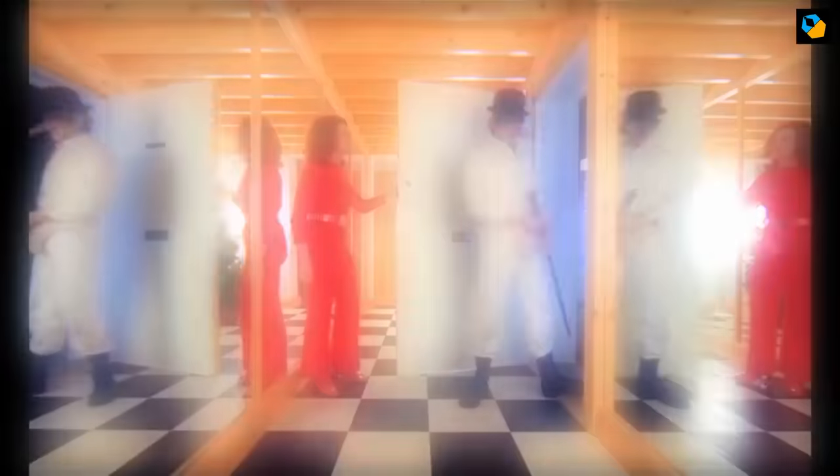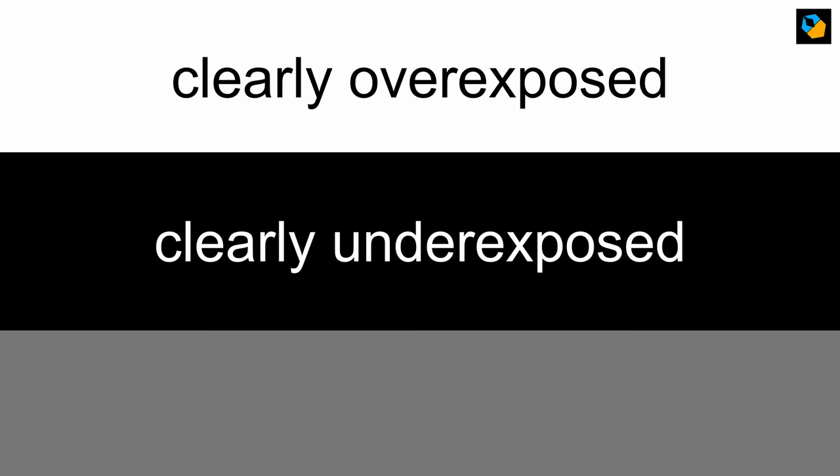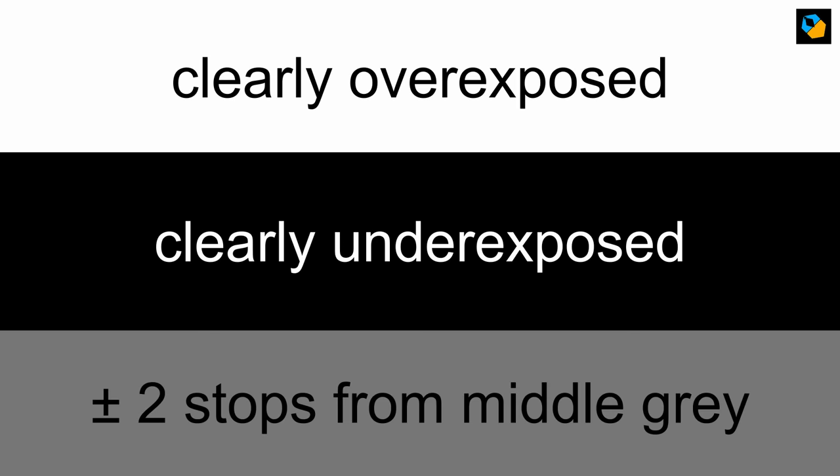To understand high key and low key lighting, let's take some common scenarios. You could either have an overexposed foreground or background, an underexposed foreground or background, and a middle exposure — let's just call it grey. I use the words black and white for the other two, but please remember it doesn't have to clip to white or black — I'm just doing it for simplicity. Grey actually means the range of about 2 stops over and under middle grey. So there's a grey area — don't pardon the pun!